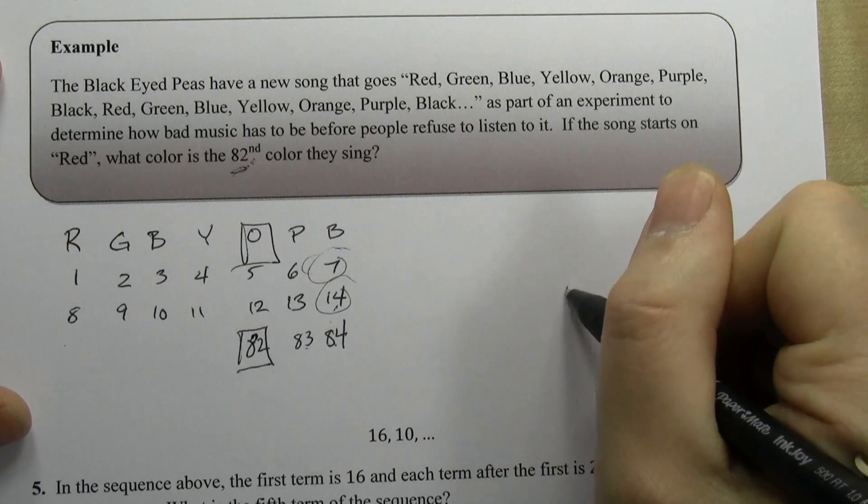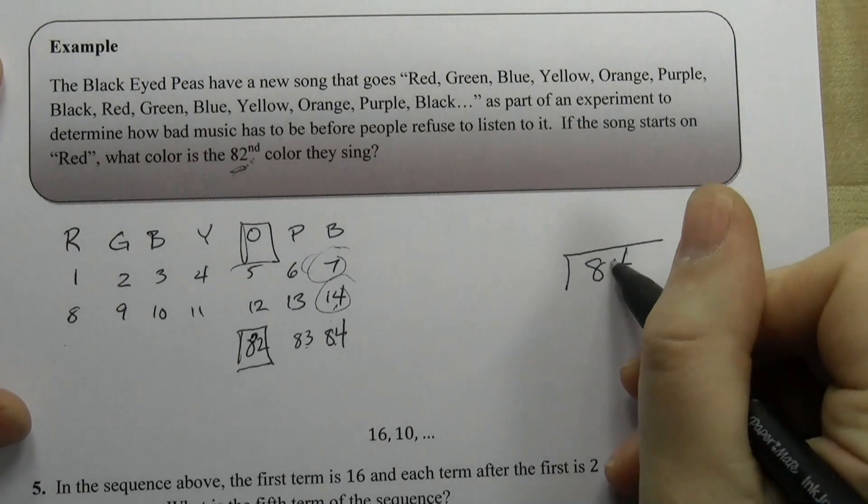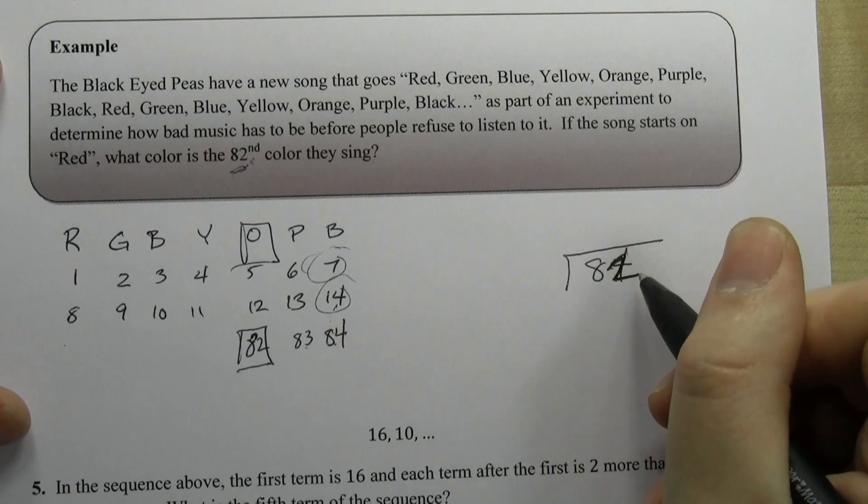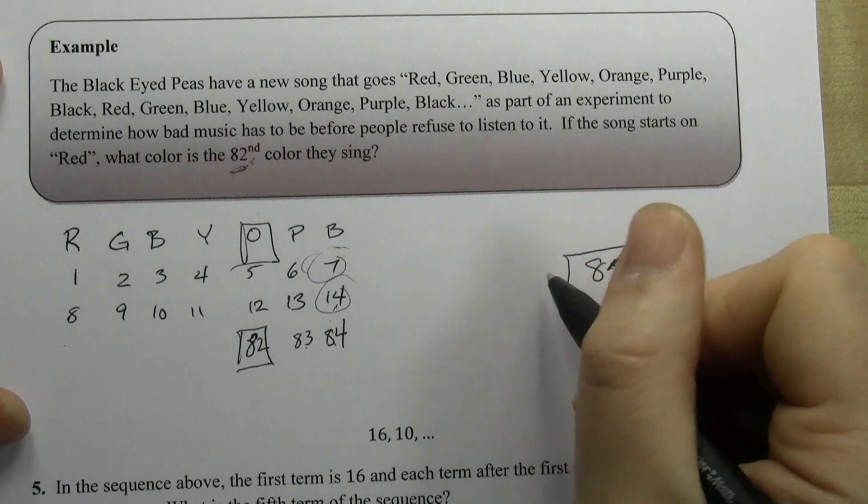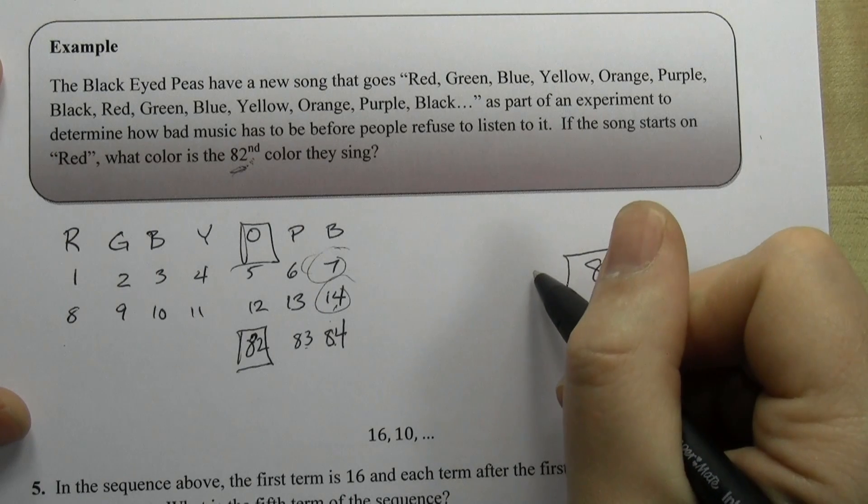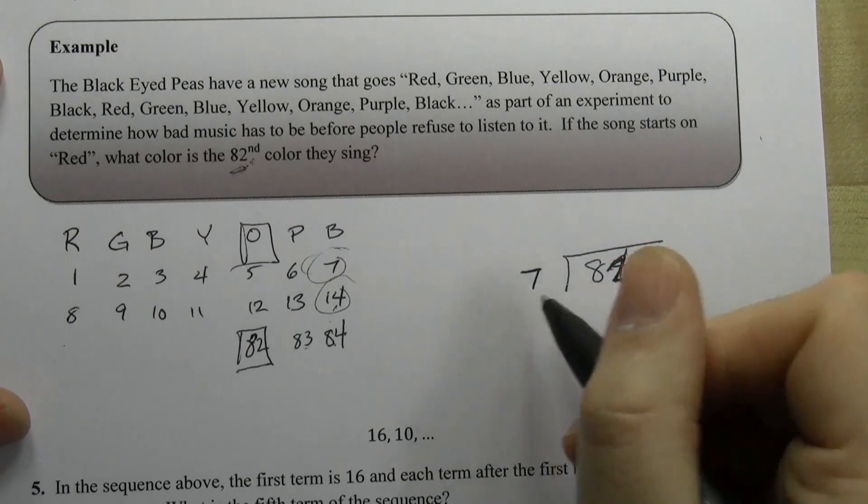In which case you take the term that you're shooting for, in this case 82, the 82nd term, and you put it under the division bar. And then you put the number of terms in one repetition of the sequence, here that's 7, and you just divide this into this.